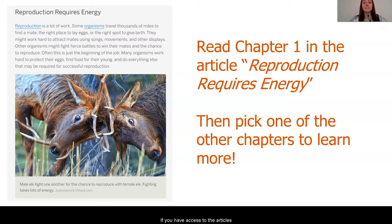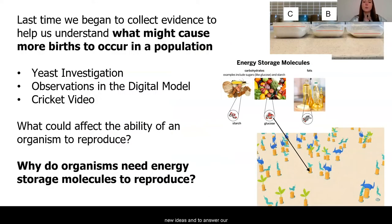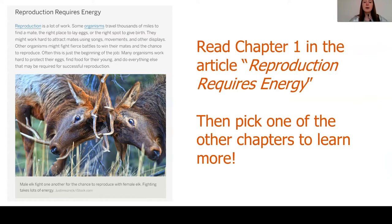If you have access to the articles, you can go ahead and read them on your own, actively annotating, looking for new ideas and to answer our question of what is causing more births to occur in a population, and what does this have to do with energy? If you do not have access to the articles, you can listen to a separate recording where I read through the first chapter and the following chapters, so everything is available to you.